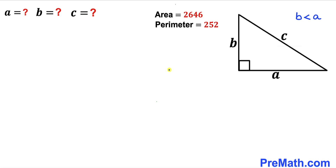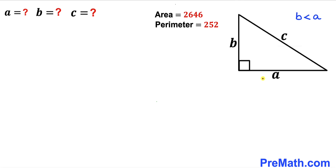Welcome to PreMath. In this video we have got a right triangle such that its side lengths are A, B and C, where C is the longest leg. Moreover, side B is less than side A. The area of this right triangle is 2646 square units, whereas the perimeter is 252 units. We are going to calculate the values of side lengths A, B and C.